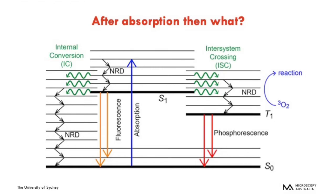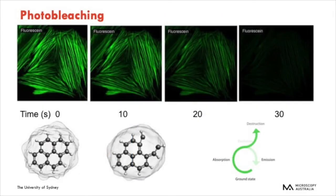The most common of these reactions you may encounter is the triplet-triplet oxygen reaction, also known as photobleaching. Here we have fluorescein-stained actin — at time zero, we excite it with 488nm light. At 10 seconds it's slightly dimmer, at 20 seconds slightly dimmer again, and at 30 seconds it has completely disappeared. What's happening is that the molecule vibrates so much it actually breaks a bond, meaning it is no longer available to fluoresce. This is one of the most common problems in fluorescence microscopy, and will be discussed later in sample preparation and in imaging.